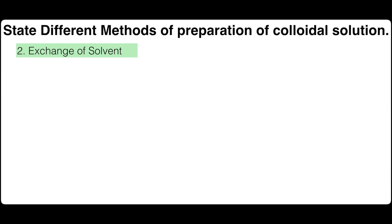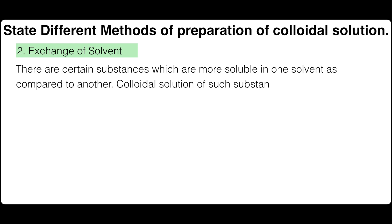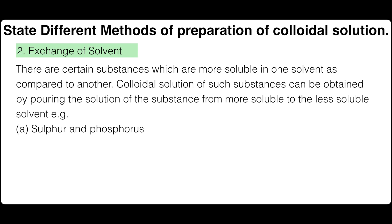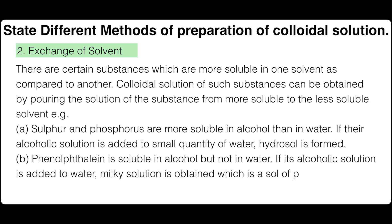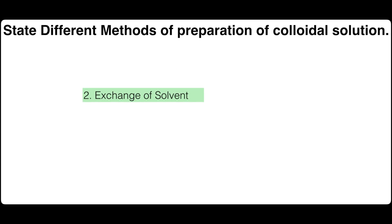Second, exchange of solvent. There are certain substances which are more soluble in one solvent as compared to another. Colloidal solutions of such substances can be obtained by pouring the solution of the substance from more soluble to the less soluble solvent. For example, sulfur and phosphorus are more soluble in alcohol than in water. If their alcoholic solution is added to small quantity of water, hydrosol is formed. Phenolphthalein is soluble in alcohol but not in water. If its alcoholic solution is added to water, milky solution is obtained which is a sol of phenolphthalein.